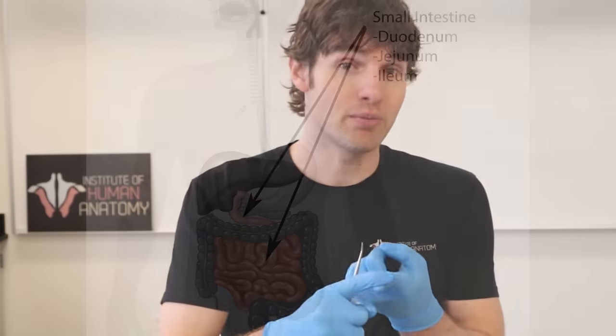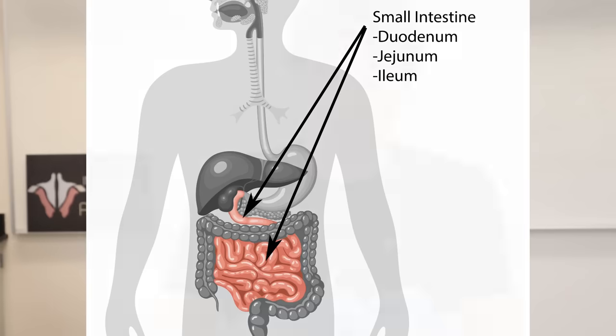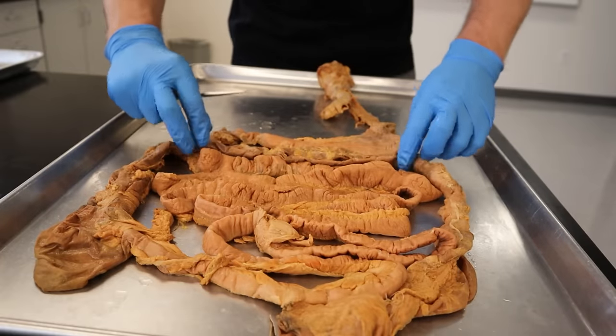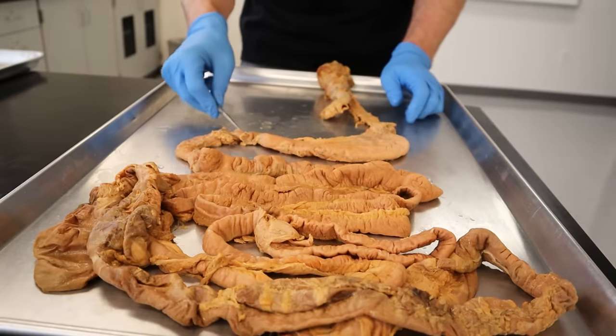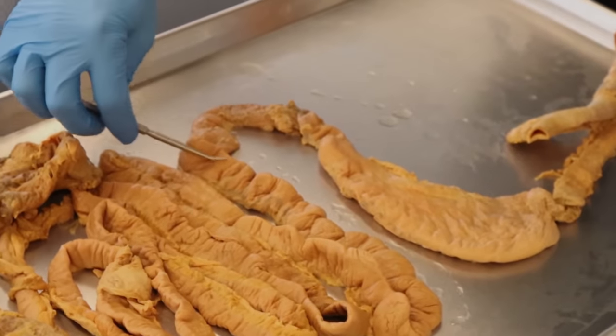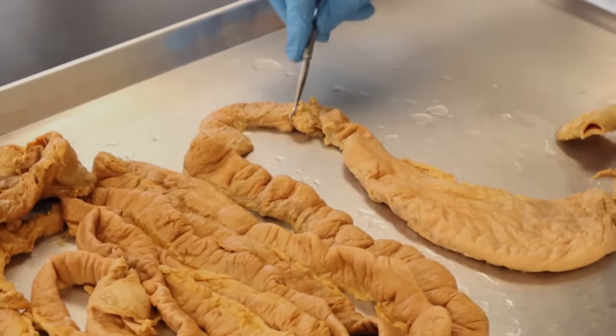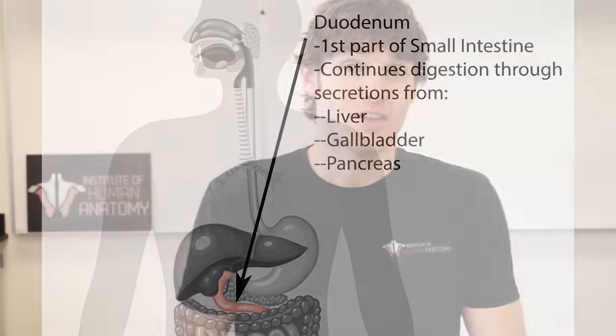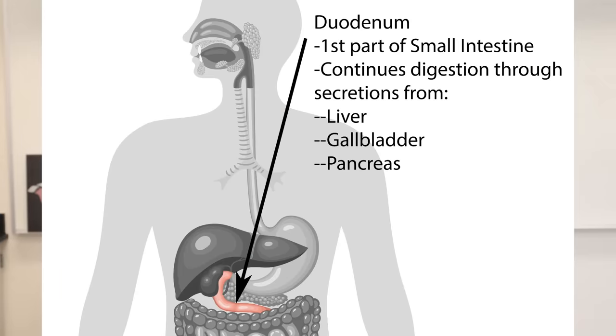Moving on to the small intestine, which is broken down into three segments: the duodenum, jejunum, and ileum. A good mnemonic is 'DJ ice' to remember the order. The duodenum is the first part and it still takes part in digestion. It has important relationships with what we call accessory digestive organs — three that you've heard of: the liver, the gallbladder, and the pancreas.